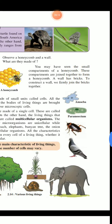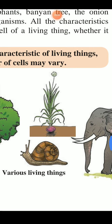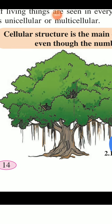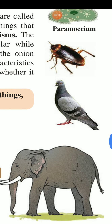Some living things are made of a small unit called cells. All the actions and processes in the body of living things are brought about with the help of these microscopic cells. Some living things are made of a single cell — these are called unicellular. Examples are amoeba and paramecium. On the other hand, living things made of many cells are called multicellular organisms. Examples include cockroach, pigeon, and elephant. Cellular structure is the main characteristic of living things, even though the number of cells may vary.